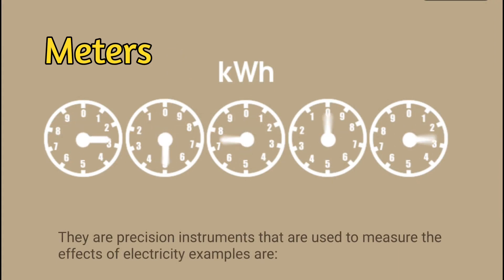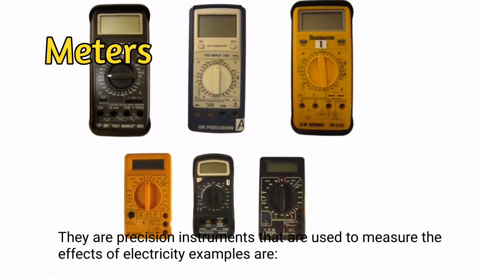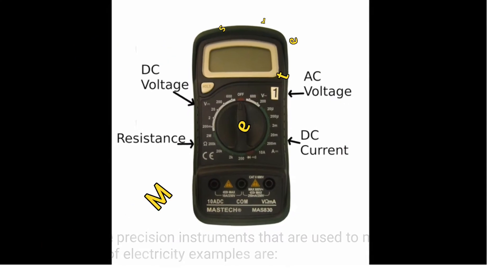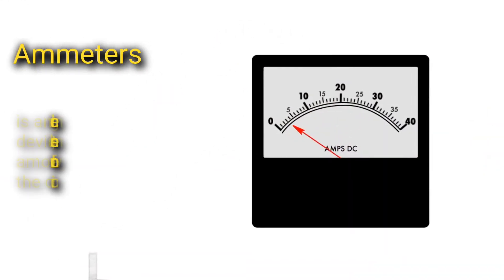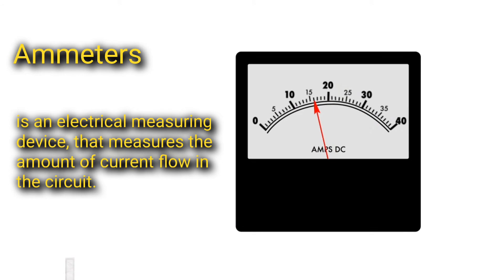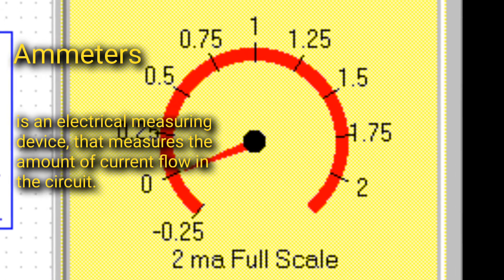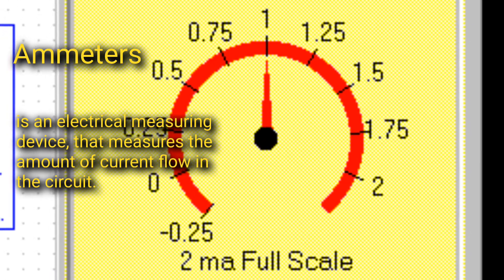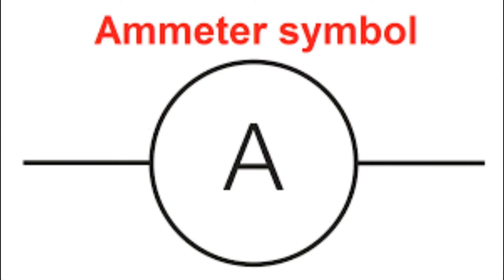Meters: they are precision instruments used to measure the effects of electricity. Ammeter is an electrical measuring device that measures the amount of current flow in the circuit. Ammeters are typically represented in a circuit by a circle with the capital letter A inside.